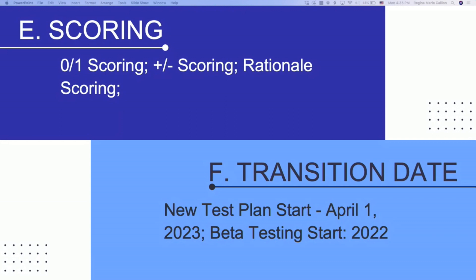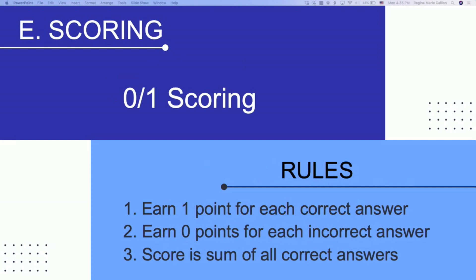Let's start with the zero-one scoring. I really like this scoring because the rules are simply this: you earn one point for each correct answer, and if you get an answer incorrect, you don't get any points for it. So the amount of points you get are based off of how many right answers you can choose. There's no penalty if you get a question incorrect.